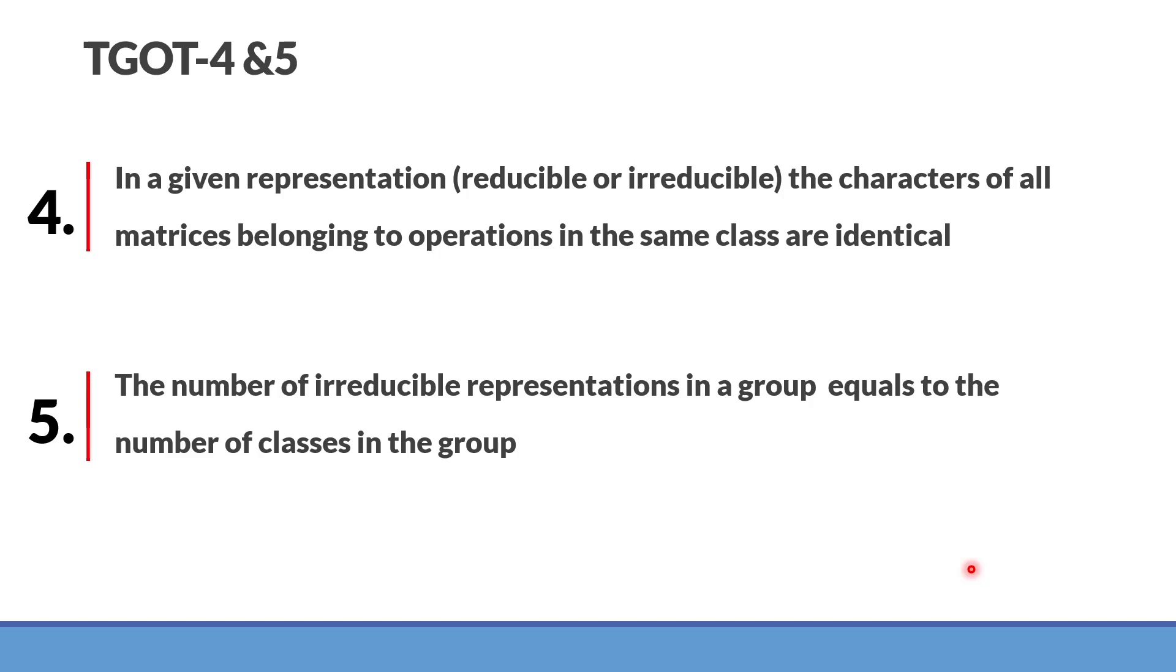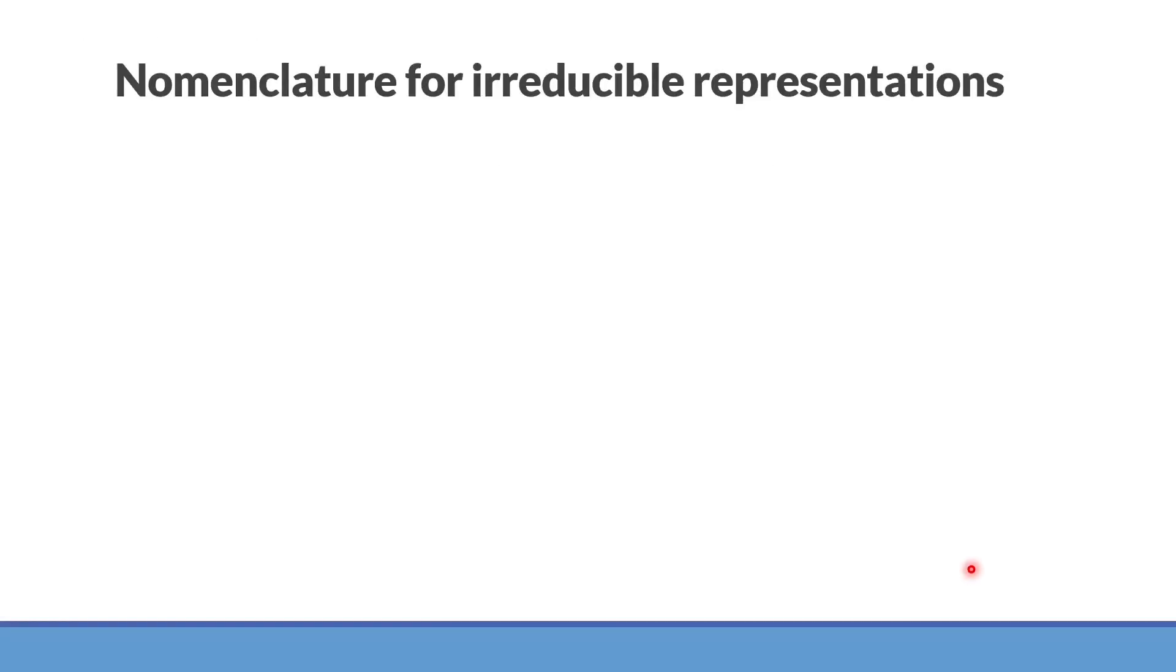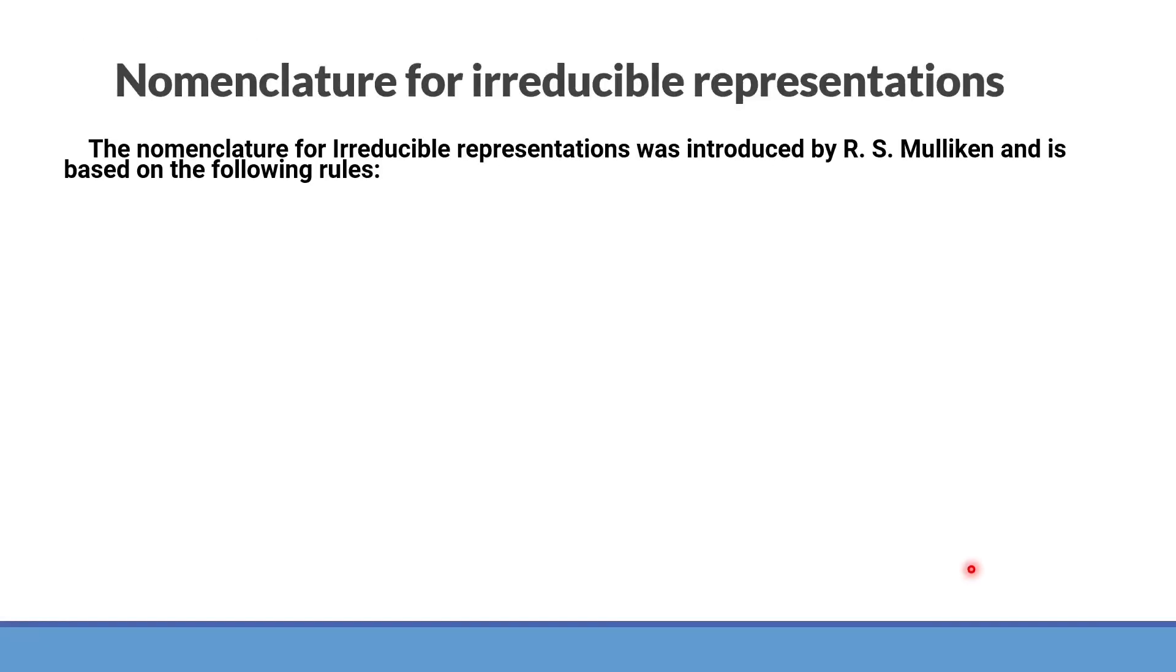Having the five postulates or five points of the great orthogonality theorem, it's quite easy to understand the character table, to make it, to construct it and so on. Now, a very important thing you should note is that there is a different scheme of nomenclature as proposed by R.S. Mulliken for irreducible representations based on certain rules and assumptions. Please note them very carefully so that you will be able to understand the various character tables.